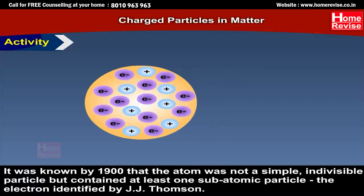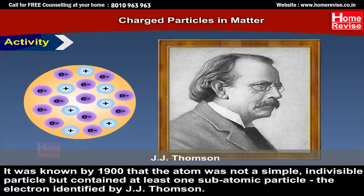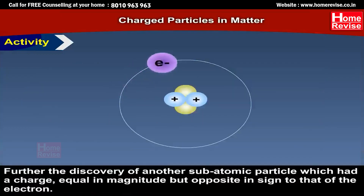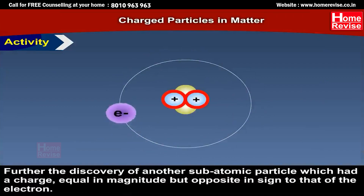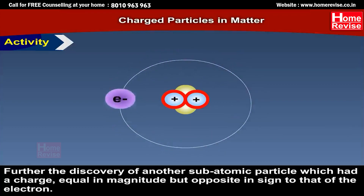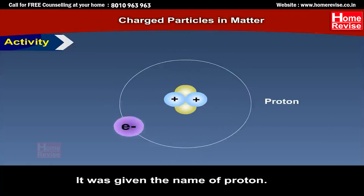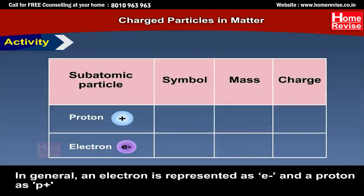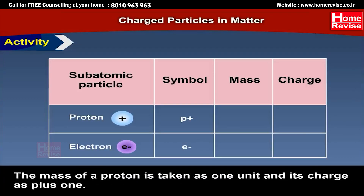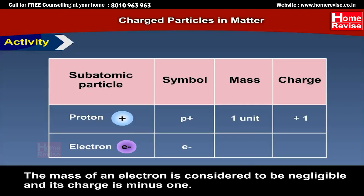The electron was identified by J.J. Thompson. Further, the discovery of another subatomic particle, which had a charge equal in magnitude but opposite in sign to that of the electron, was given the name proton. In general, an electron is represented as e⁻¹ and a proton as p⁺¹. The mass of a proton is taken as 1 unit and its charge as +1. The mass of an electron is considered to be negligible and its charge is −1.